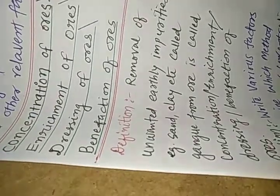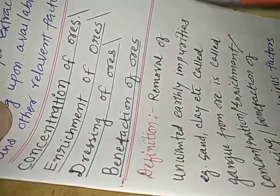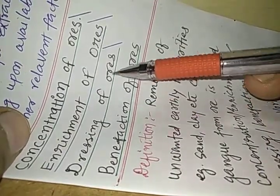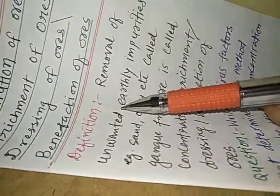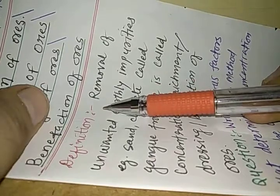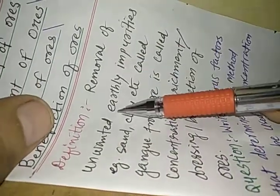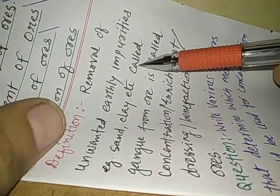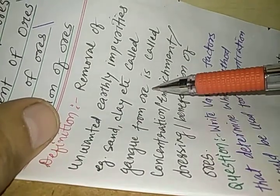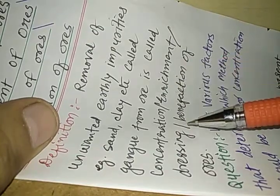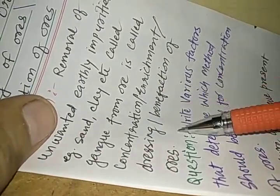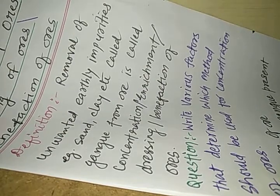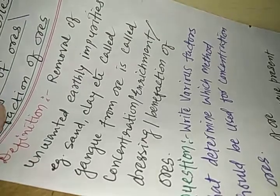We want to study the concentration of ores, also known as the dressing of ores or benefaction of ores. The removal of unwanted earthly impurities — such as sand, clay, etc. — called gangue, from the ore is called concentration or enrichment or dressing or benefaction of ores.